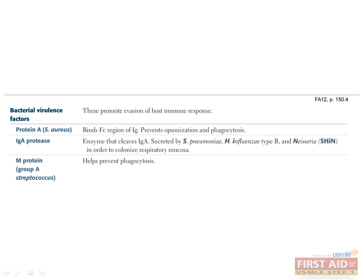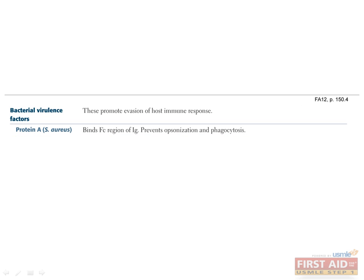These features are important ways that bacteria avoid being cleared by our immune systems. Staph aureus contains Protein A, which binds to the Fc portion of antibodies. This makes it impossible for opsonization and phagocytosis by macrophages and neutrophils to occur because they also attach to the Fc region, which is now unavailable.